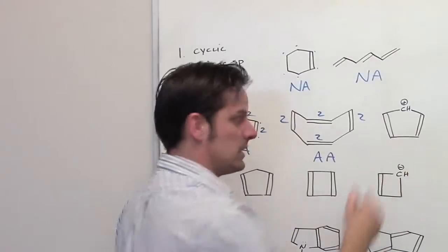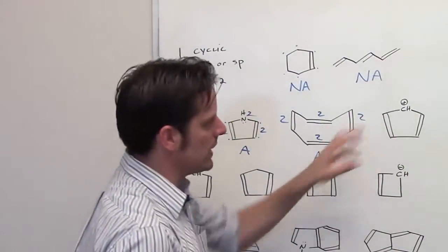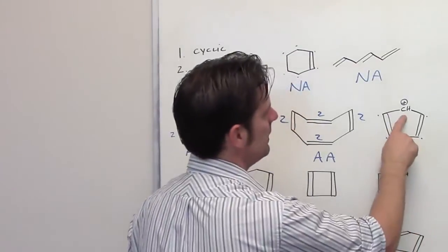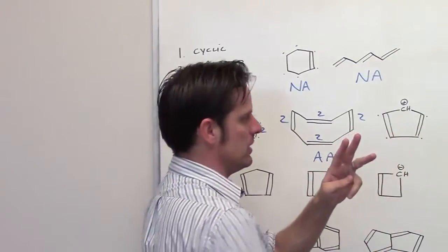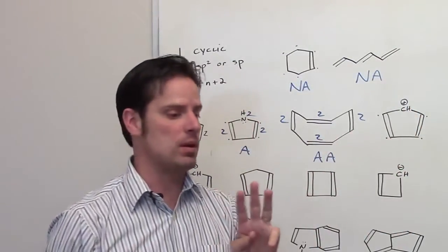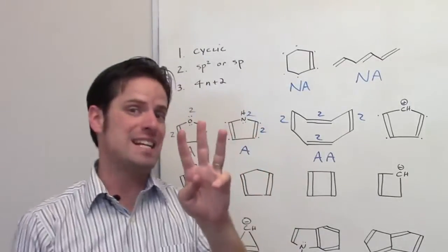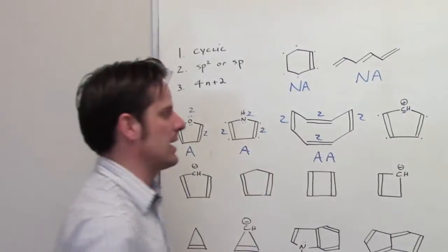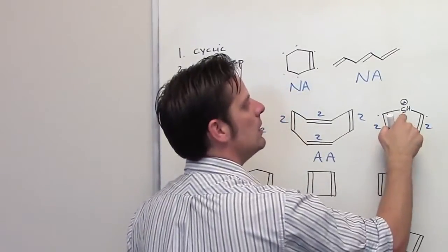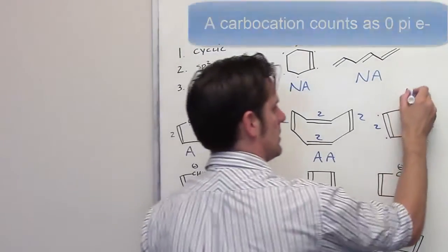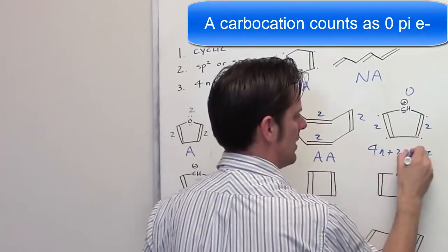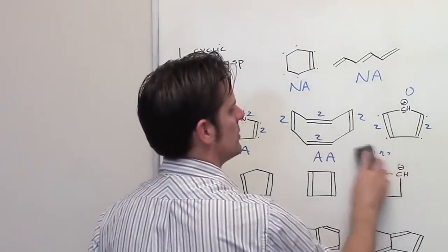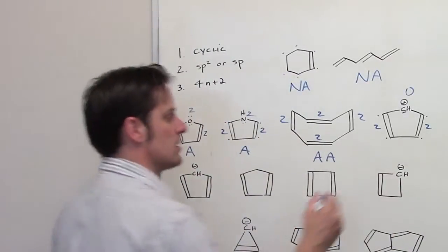Now we'll go to this one. Is it cyclic? Yes. Are all of the atoms in the ring sp2 or sp hybridized? The other four carbon atoms are. What about that carbon with a positive charge? It has a bond to the right, a bond to the left, a bond to hydrogen, and it's a carbocation — meaning it has an empty orbital. We don't count empty orbitals for hybridization, so it only has three things around it and is sp2. Let's count pi electrons: two double bonds give 2 + 2 = 4. A positive charge on carbon counts as 0. Can I solve 4n + 2 = 4? No. So this molecule meets criteria 1 and 2, but not 3 — it is anti-aromatic.